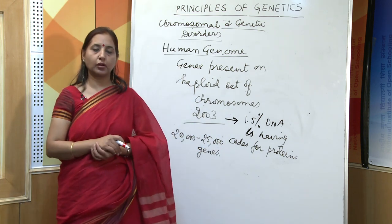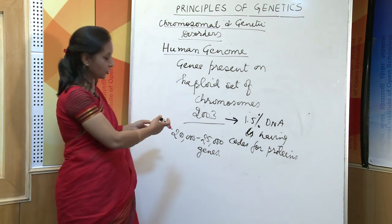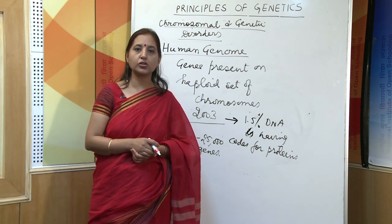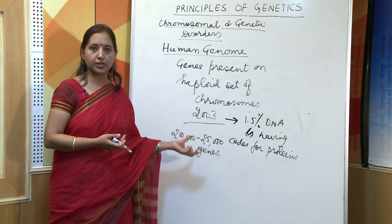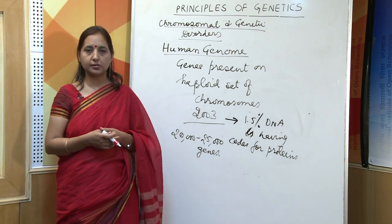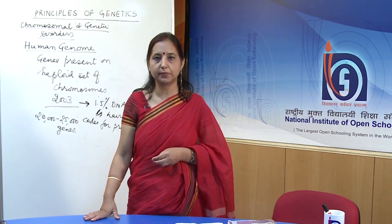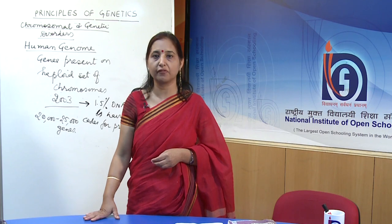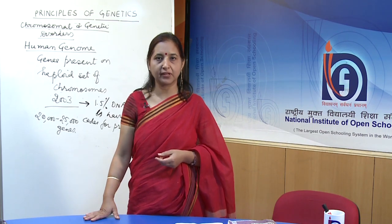Before the Human Genome Project was completed, it was thought that there are 80,000 genes in the human body. After its completion, we are sure there are 25,000 genes. Scientists are looking forward to solutions to all problems caused by defective genes. We know the genes, their sequencing, their structure, and their function. Scientists are very hopeful that we will soon find solutions to many disorders for which people are still suffering, and with this we come to an end.